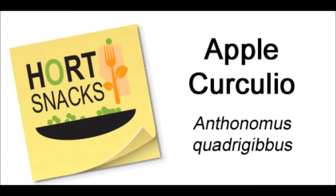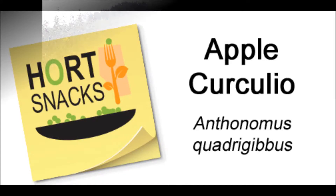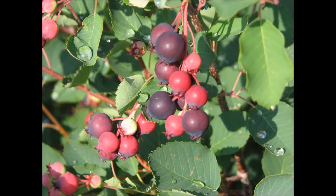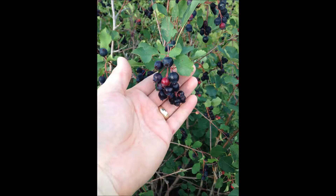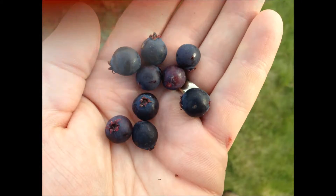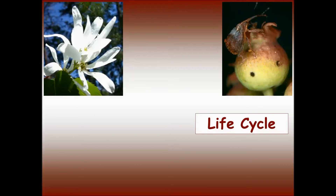The apple curculio is a pest of saskatoon berries in Alberta, as well as chokecherries, apples, crabapples, hawthorn and pears. The adult is a type of weevil, 5mm long, reddish brown with a long curved snout.